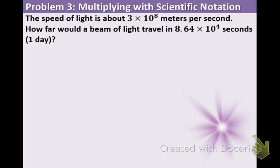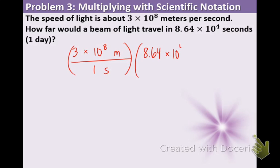What we're going to do is multiply the speed and the time. So we're going to have 3 times 10 to the 8th meters in one second. And then we're going to have 8.64 times 10 to the 4th seconds, over one.